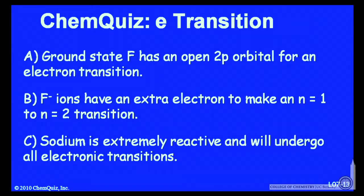Let's consider an argument for each of the possible answers. A: ground state fluorine has an open 2p orbital for an electron transition. B: F- ions have an extra electron to make that n=1 to n=2 transition. Or C: sodium is extremely reactive and will undergo all electronic transitions.